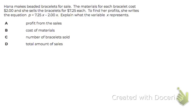Here we're told Hannah makes beaded bracelets for sale. The materials for each bracelet cost $2, and she sells the bracelets for $7.25 each. To find her profit, she writes this equation. They want us to explain what X represents.